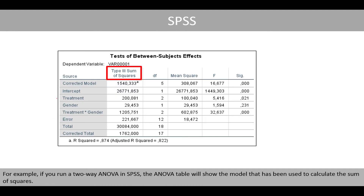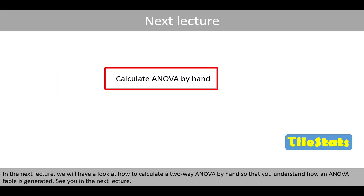For example, if we run a two-way ANOVA in SPSS, the ANOVA table will show which type of model has been used to calculate the sum of squares. In the next lecture, we will look at how to calculate the two-way ANOVA by hand so that you understand how an ANOVA table is generated. See you in the next lecture!